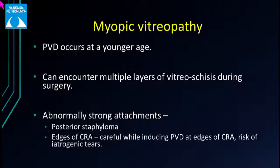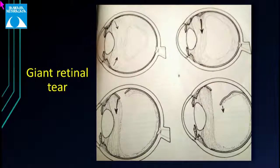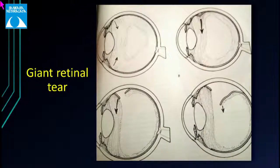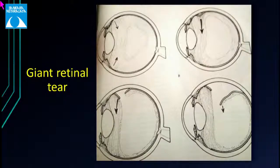In myopic vitreopathy, PVD can occur at an early age with more vitreous liquefaction, and there can be abnormally strong adhesions at choreoretinal degeneration areas and edges of a posterior staphyloma. In giant retinal tear pathogenesis versus a horseshoe-shaped tear, there is massive vitreous liquefaction and traction at the vitreous base. In a routine HST, gel vitreous supports the posterior flap. But when this vitreous pocket is liquefied, vitreous seeps in, causing posterior slippage of the retina and resulting in a giant retinal tear.